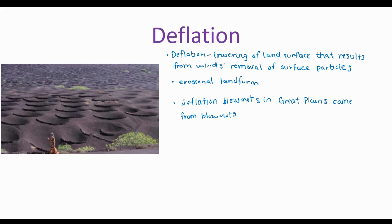This picture shows how through deflation, wind can create a bowl-shaped blowout. So if you see something that looks like this, you will know that it is deflation caused by wind erosion.